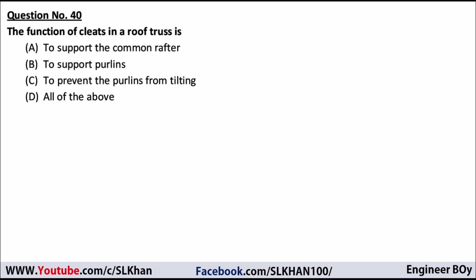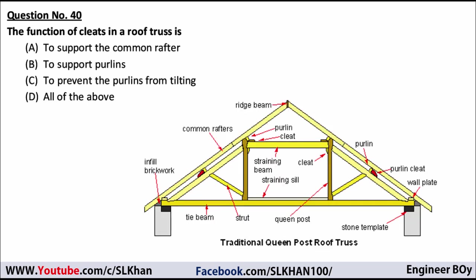Question 40: the function of a cleat in a roof truss is to prevent the purlin from tilting. Purlin surfaces are always supported by the cleat in truss roofs.